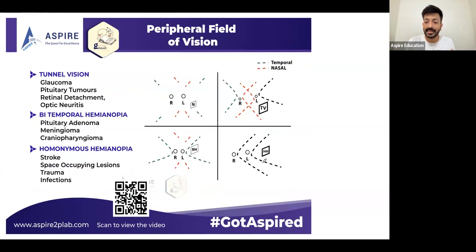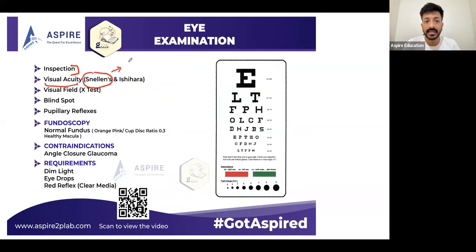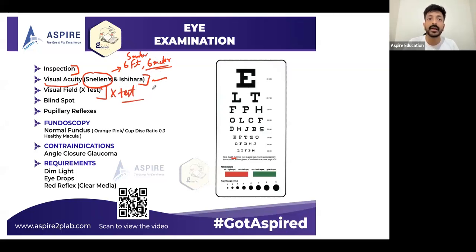For eye examination, start from inspection, then visual acuity using a Snellen's chart. The distance is six feet for the smaller chart and six meters for the bigger Snellen's chart. Check color vision with the Ishihara plate. Then do the visual field test — what we call the X test — which will tell you if the patient has tunnel vision, bitemporal hemianopia, or homonymous hemianopia.